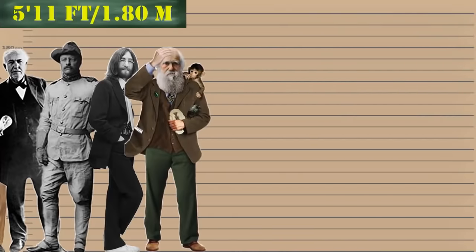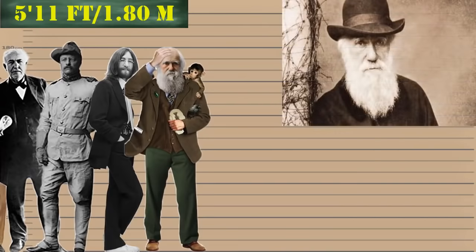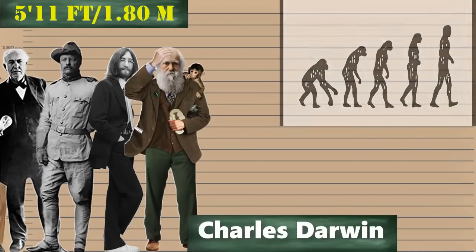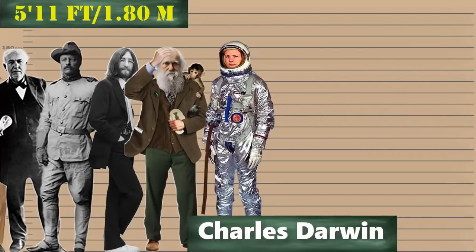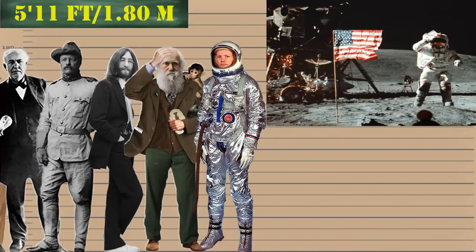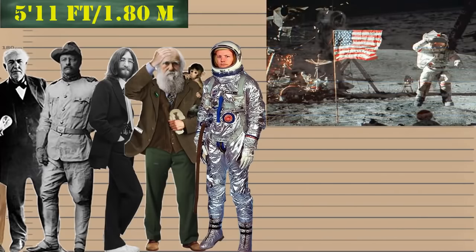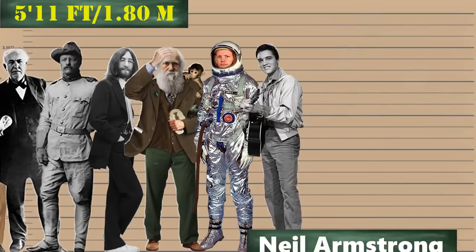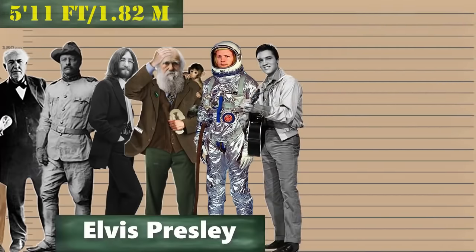At 5 feet 11 inches we have English naturalist, geologist and biologist best known for his contributions to the science of evolution — Charles Darwin. Followed by the American astronaut and aeronautical engineer who was the first person to walk on the moon — Neil Armstrong. And also the king of rock and roll, Elvis Presley.